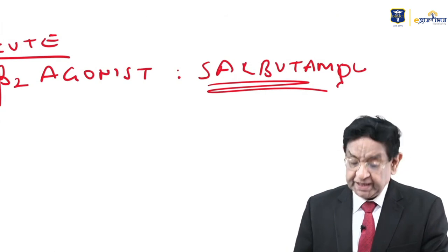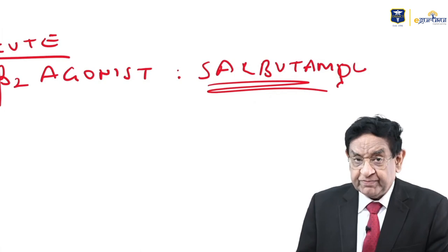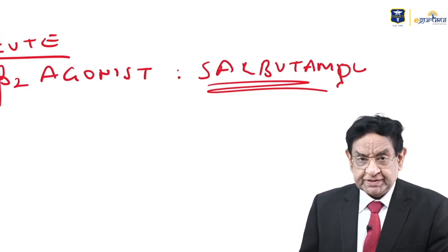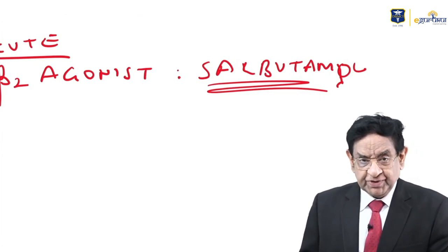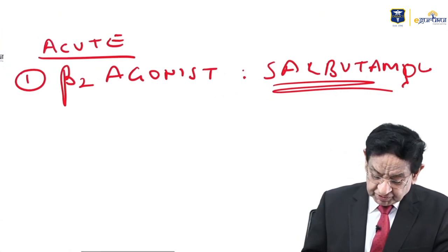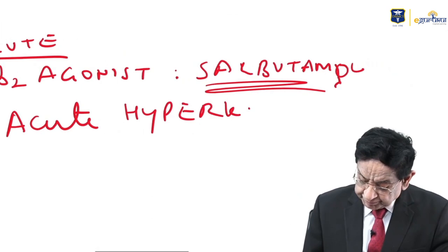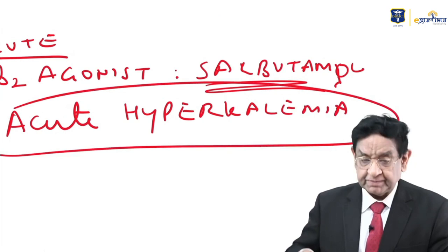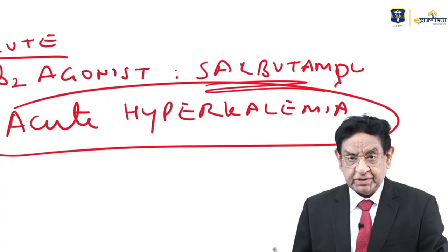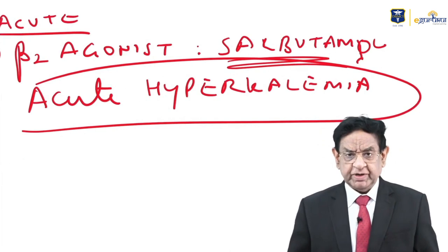A question for you: what are other uses of salbutamol? Besides asthma and COPD as a bronchodilator, it is used in acute hyperkalemia — the treatment of acute hyperkalemia. This is a rank number one question: salbutamol is used in the treatment of acute hyperkalemia.